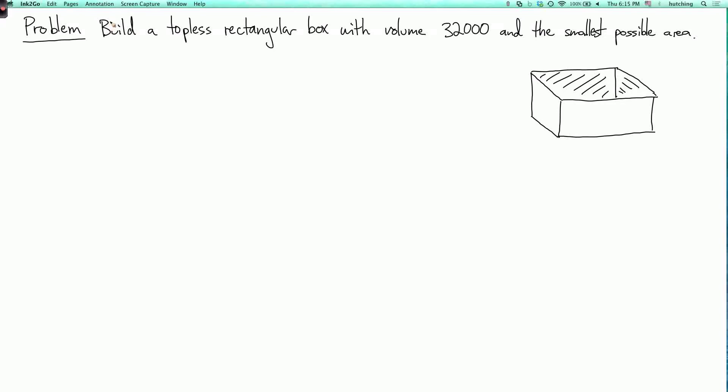Imagine we have a bunch of stuff that we need to store in a box, and it has a total volume of 32,000, and to save money and preserve the environment, we want to build this box using the smallest amount of material. So we want to minimize its area. And it's also not going to have a top, so it just has five faces. It has front and back faces, left and right faces, and a bottom face. Let's solve this problem using Lagrange multipliers.